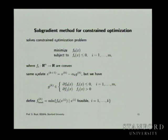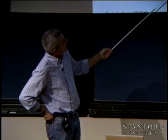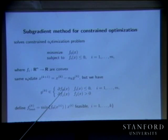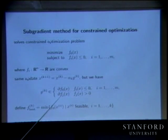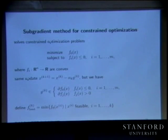Here's the update — it's really simple. You simply do a subgradient step. If the point is feasible, you do an objective subgradient step. If it's not feasible, you find any violated constraint and use a subgradient of that.